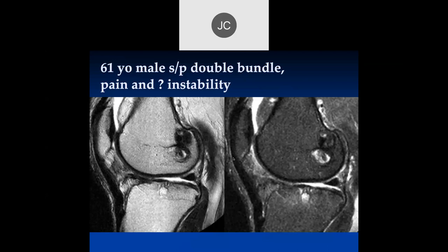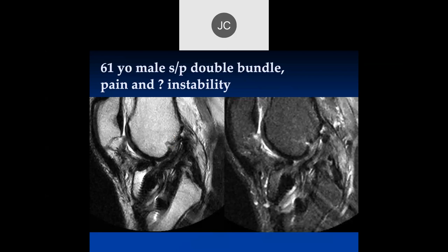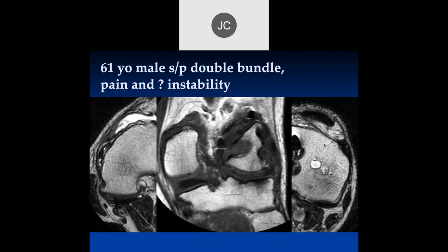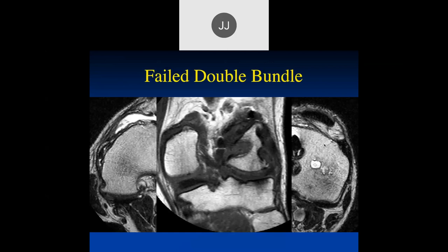So this is a 61-year-old male with a double bundle who now has pain and instability. On these sagittal views, it looks like there are two tunnels in the posterior femur. And here we can see two tibial tunnels as well, with some graft visible in both. I would never do that on a 61-year-old male - this is way too much surgery. We can see there is a little tear of the anteromedial bundle up here, and this patient became unstable. It's not well placed. So that was a failed double bundle.